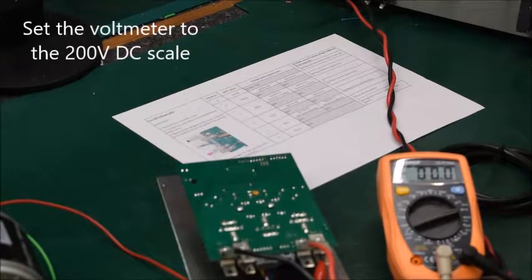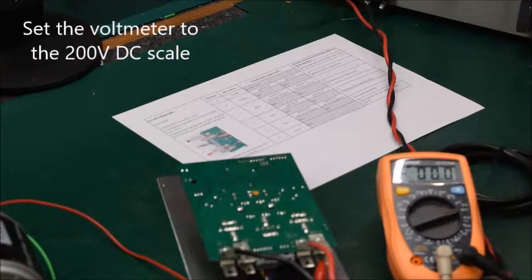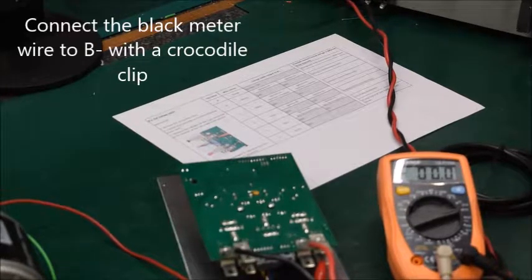Next set your volt meter to the 200 volt DC scale. All these voltage measurements are going to be made with respect to the B minus terminals. And to make this easy we use a crocodile clip on the black meter wire.